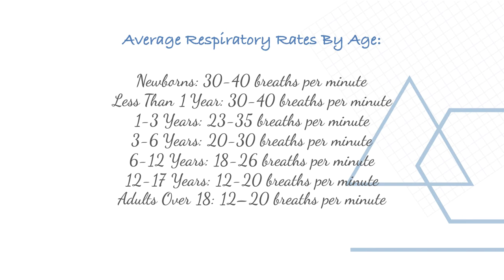It is important to know that average respiratory rate differs by age. A rate of 30 breaths per minute is normal in a child but concerning in an adult. Newborns have 30–40 breaths per minute; infants are similar. As patients grow older, the rate decreases — 6 to 12 years is 18–26 breaths per minute, and adults is about 12–20 breaths per minute.